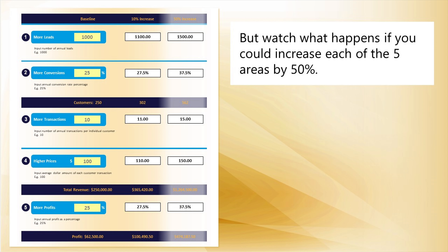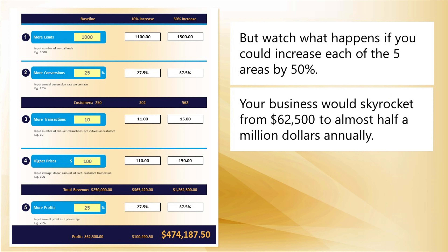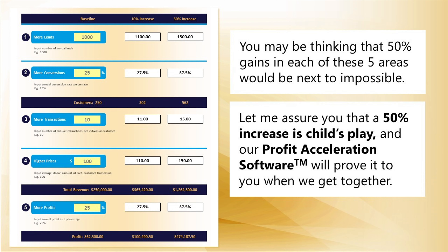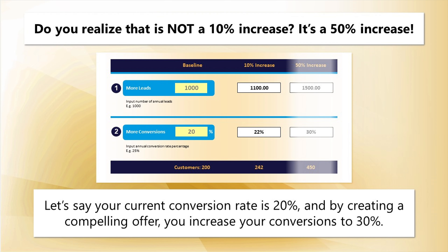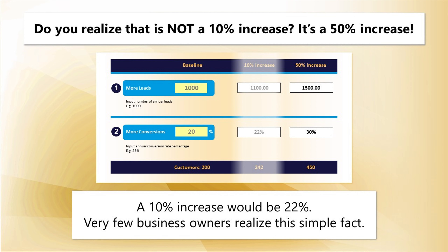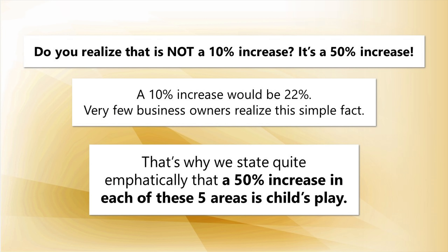But watch what happens if you could increase each of the 5 areas by 50%. Your business would skyrocket from $62,500 to almost half a million dollars annually. You may be thinking that 50% gains in each area would be next to impossible. Let me assure you that a 50% increase is child's play. Consider this: if your current conversion rate is 20% and you increase it to 30%, that is not a 10% increase — it's a 50% increase. A 10% increase would be 22%. Very few business owners realize this simple fact.